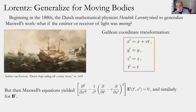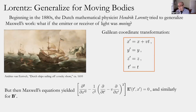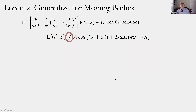But then Lorentz found something he did not expect. When he used the totally standard way of relating coordinates when there's relative motion between the emitter and receiver of light, and put those into Maxwell's equations — which relate derivatives or variations in space to rates of change over time — he got something that looked a bit more like a mess. The form no longer looked quite so simple as Maxwell's original form, meaning the solutions would no longer behave as simple sines and cosines.